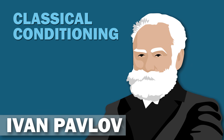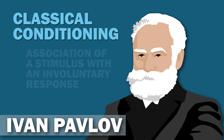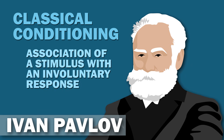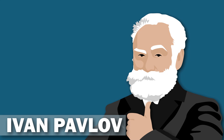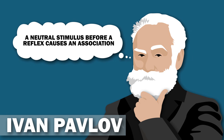Classical conditioning was first described by Ivan Pavlov and is the association of a stimulus with an involuntary response. It focuses on involuntary automatic behaviors. Pavlov noticed that a neutral stimulus presented before a reflex causes an association.